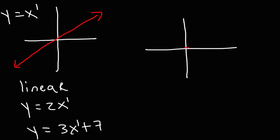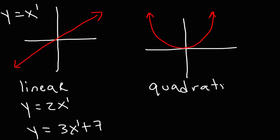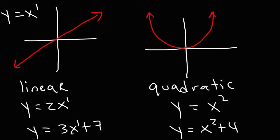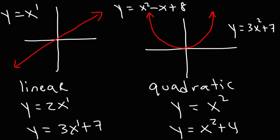The next type is a quadratic function, which looks like a parabola. The parent function is y equals x squared. Examples include y equals x squared plus 4, y equals 3x squared plus 7, or y equals x squared minus x plus 8. The leading term is x squared — you could have a coefficient in front of it or you may not.